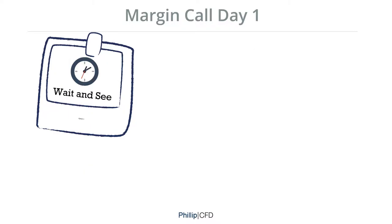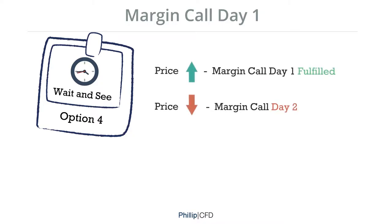Last but not least, Option 4: wait and see. As the closing price of XYZ on the previous day was $2.90, which triggered your margin call, wait and see simply means that if the price of XYZ closes at $3 or higher, your margin call day 1 will be considered fulfilled. In the event that the closing price of XYZ is $3 or lower, your margin call will be computed based on this amount and it will trigger a margin call day 2.